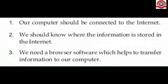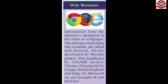Do you know what browser software is? Usually, information from the internet is displayed in the form of web pages. Web pages means any page that we can see inside the internet. The software which makes the web available to us is called a web browser.